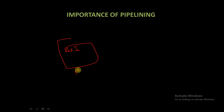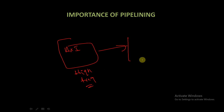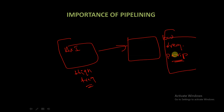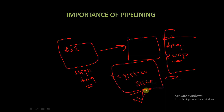Also, if an AXI interface operates at higher frequencies and wants to communicate with any slower, low-frequency peripherals, then this concept of register slice becomes very important. So this is a brief overview of the concept of register slice in AXI — it's a powerful technique that gives designers the flexibility to optimize their design based on specific requirements and constraints.